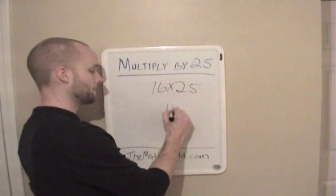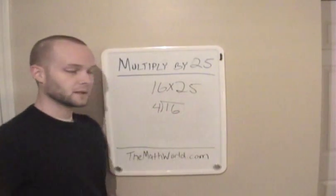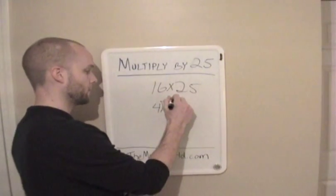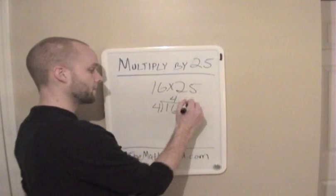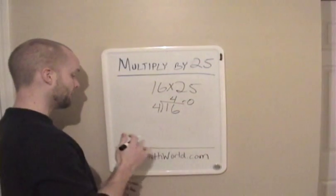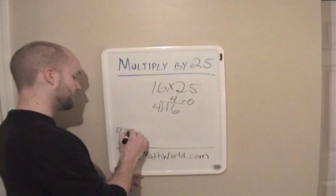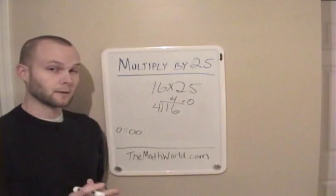So 16 divided by 4. Now 4 goes into 16 four times with a remainder of 0. And that's very important. If you have a remainder of 0, then you're going to add on two 0's at the very end of your answer.